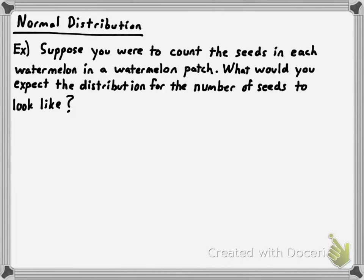Suppose you were to count the seeds in each watermelon in a watermelon patch. What would you expect the distribution for the number of seeds to look like? Suppose this watermelon patch had 500 watermelons or 2,000 watermelons — what would you expect to be the number of seeds that most watermelons would typically have? I'm sure you're watermelon experts and have that exact number in mind. I don't, but I think this makes sense.